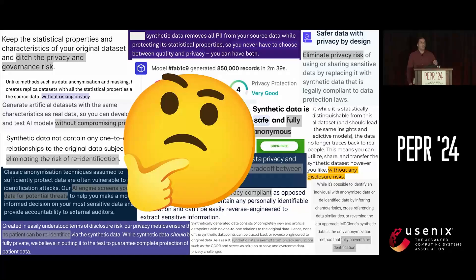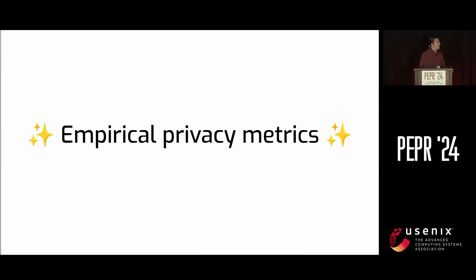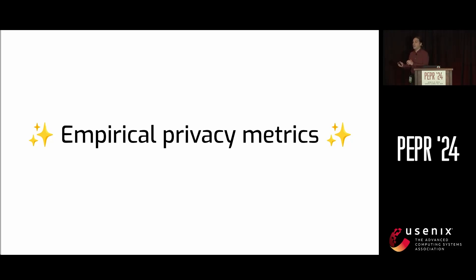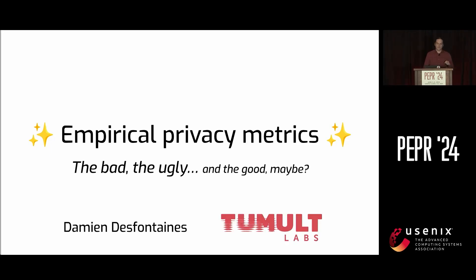Sometimes though, the answer seems to make a lot more sense. That answer is: we know it's safe because we can measure how safe it is. We can generate some data, run some calculations, and the metric tells you whether the data you generated is too risky or whether you're good to go. That sounds pretty great, right? Hi, I'm Damien, and today I'm really excited to tell you about empirical privacy metrics.